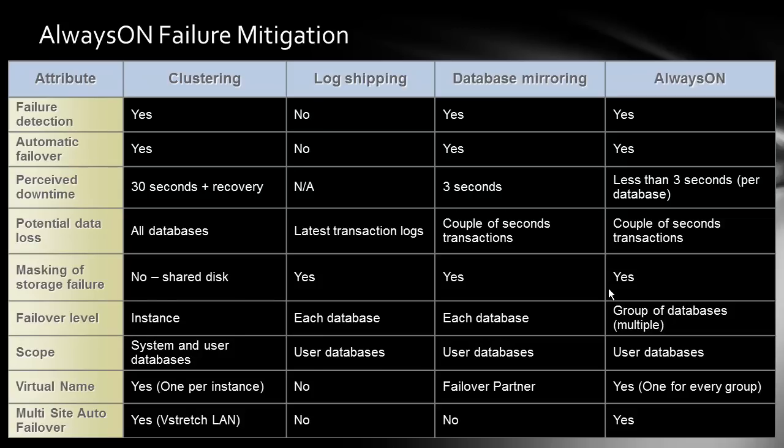Failure detection is available with clustering and mirroring. Automatic failover is provided by clustering as well as mirroring and Always On. For perceived failover time, Always On is pretty good — pretty much equal to, or in fact better than, the time taken by database mirroring to do failover one database at a time.